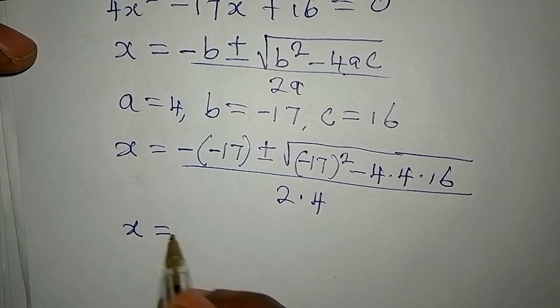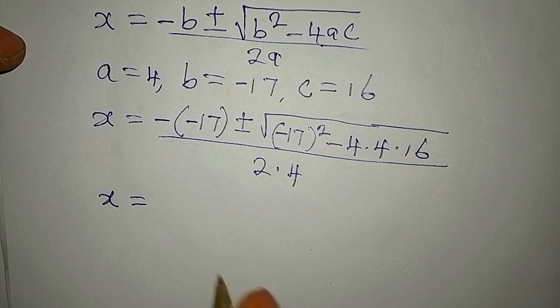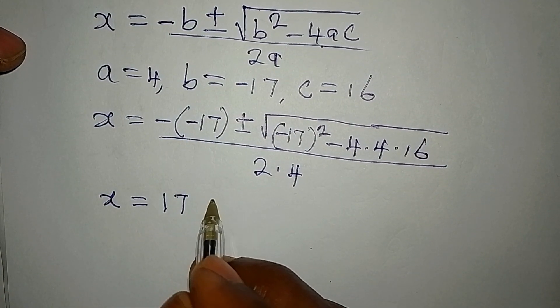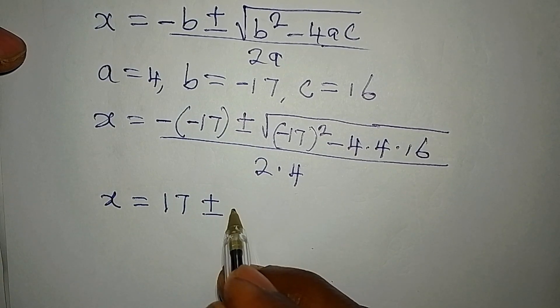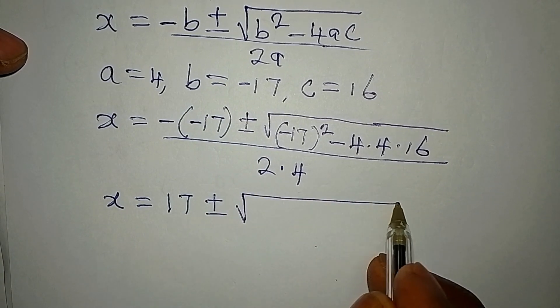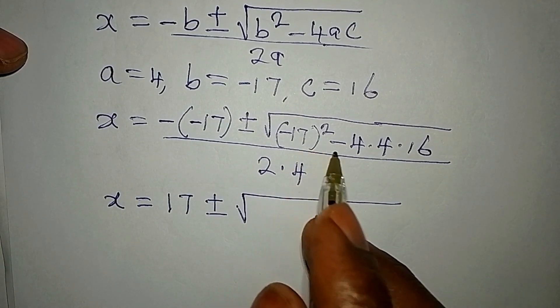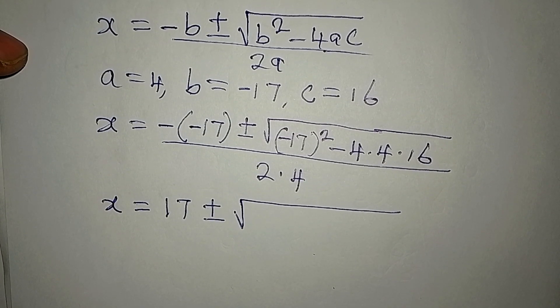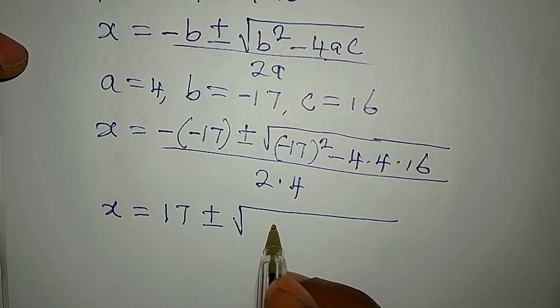I believe this is interesting, right? Now, x here is equal to... We have negative negative which gives us positive 17. Plus or minus, then we have minus 17 squared, so we square that, and that will give us 289.